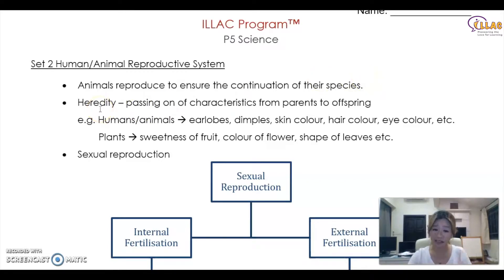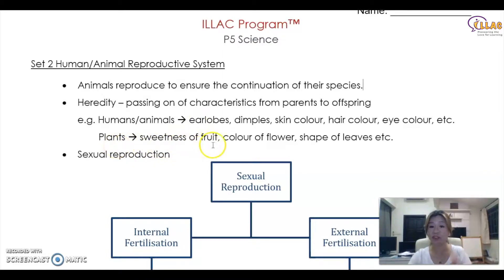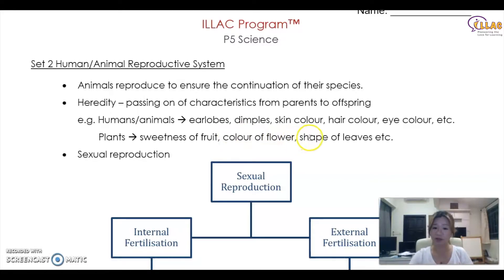What is the meaning of heredity? Basically, they are trying to test your understanding that there is the passing on of characteristics from parents to offspring. What are the things passed on through genes? For example, dimples, skin color, hair color, eye color, etc. For plants, they will inherit the sweetness of the fruit — meaning if the parent fruit is sweet, most likely the children fruit will be sweet as well. That same seed that reproduces into a young plant will share the same sweetness of the fruit, the color of the flower, the shape of the leaves, etc.